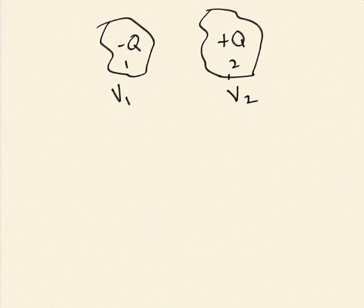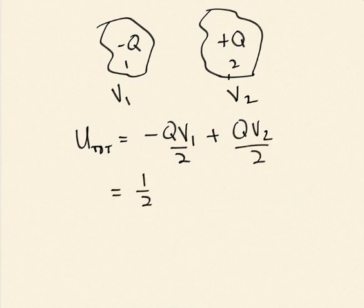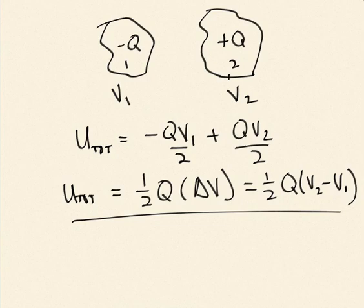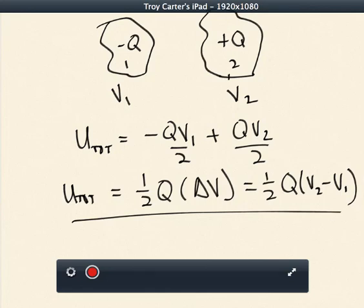So, the energy to assemble that set of charges will be the energy of conductor one, which will be minus QV_1 plus QV_2 over two, or I can write it as one-half Q times ΔV, where ΔV is V_2 minus V_1. We will treat this, basically what we're doing here is setting up what we'll call a capacitor. So, this is a system of conductors where I'm moving charge from one conductor to another, establishing a potential difference between them, and I can store energy between the two. So, let me stop there, and I'll talk more about capacitors in class or in other videos.